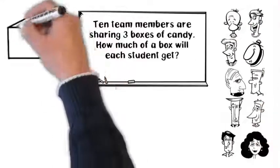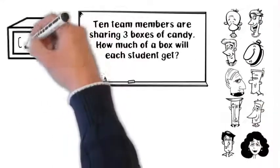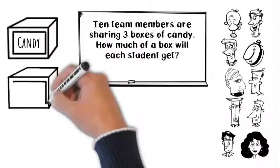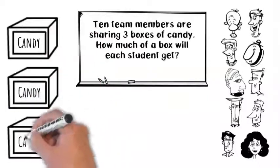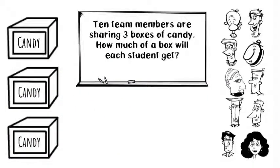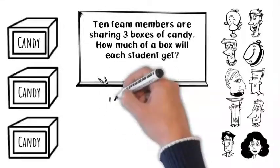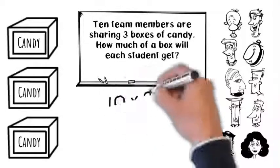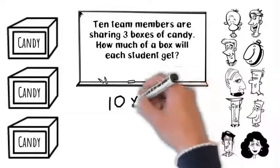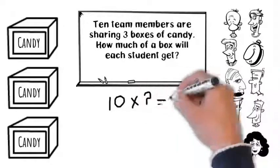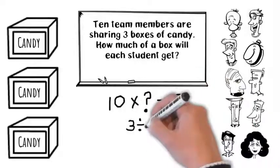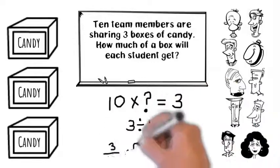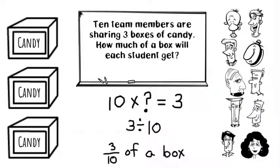Let's try another problem. 10 team members are sharing 3 boxes of candy. How much of a box will each student get? The 3 boxes are being divided into 10 groups. So really, we're looking for 10 times what equals 3, which can also be written as 3 divided by 10. That's equal to 3 tenths of a box.